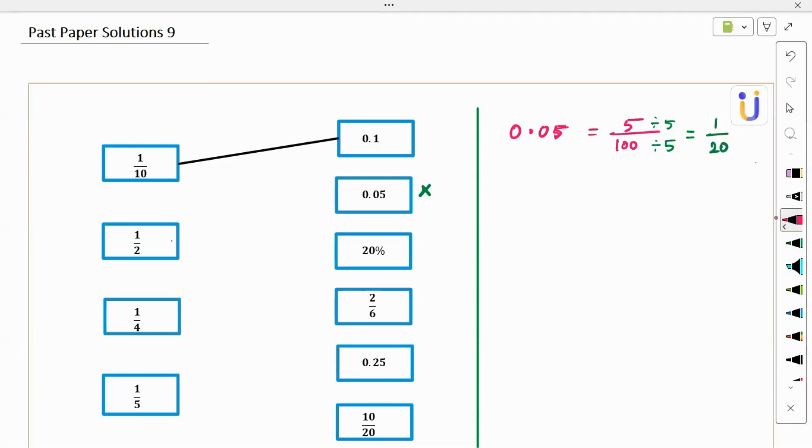So next one, 20%. 20% into fraction and it should be in simplest form. So 20%, you remove the percent and divide 100. That's how we convert a fraction. We can cancel the zeros, we got 2 by 10 and we can divide it by 2 because it should be in simplest form, right? I just first divide by 2, it goes like 1 by 5. Yes, I have an answer. So 20% will get matched with 1 by 5, right?